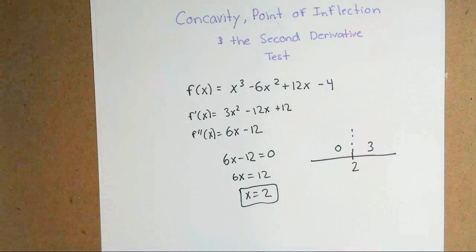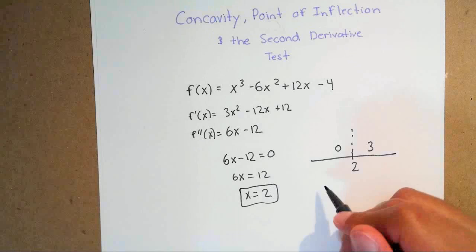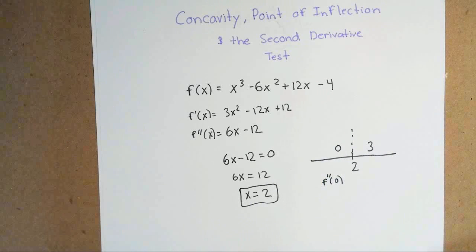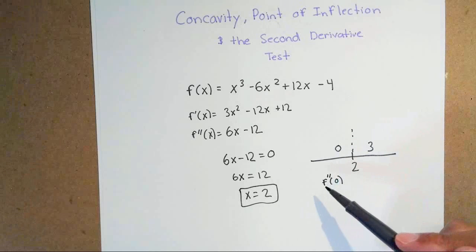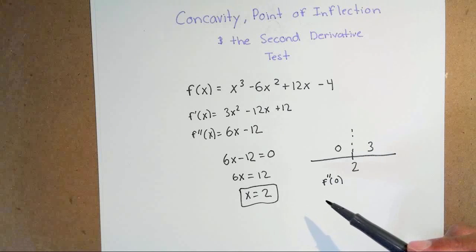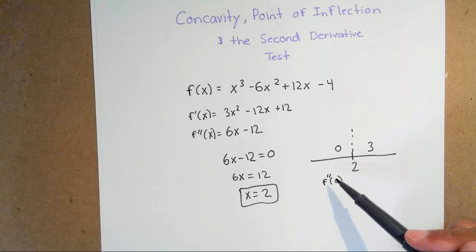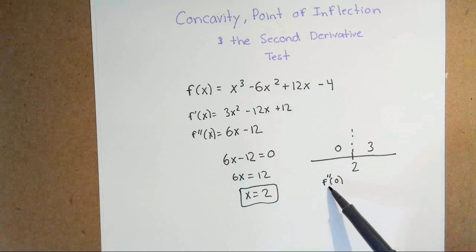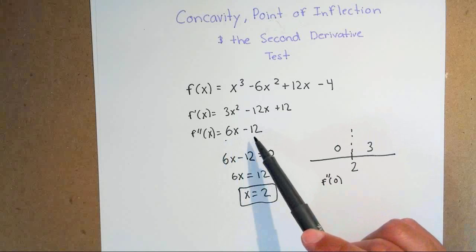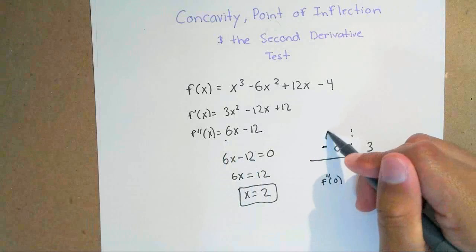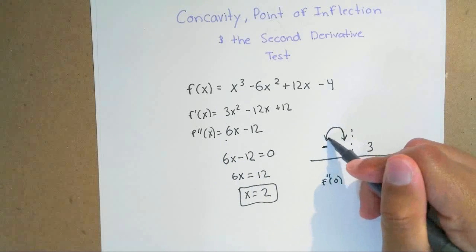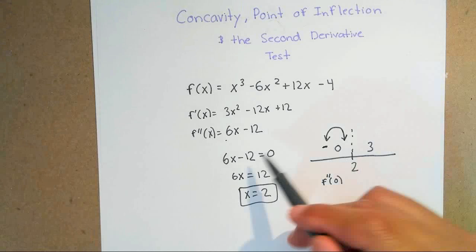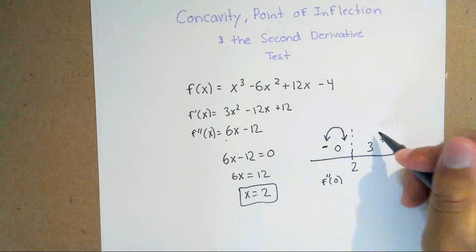Your next step is the same as what you did with your first derivative — plug in 0 into your second derivative. We plug into the second derivative because we're dealing with concavity. Whenever you want to see whether something is concave up or concave down, you plug the test value into the derivative you're working with. Plugging in 0 gives you a negative number, meaning the graph is concave down — a U shape facing downward. Plugging in 3 gives you a positive number, which tells you it's concave up.